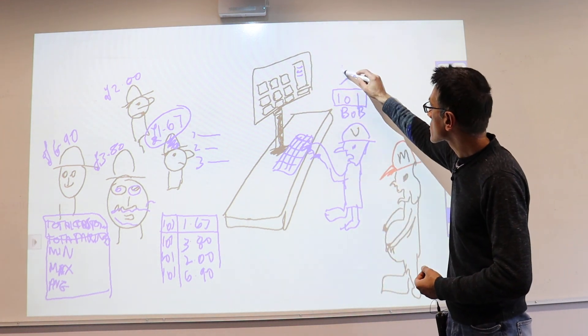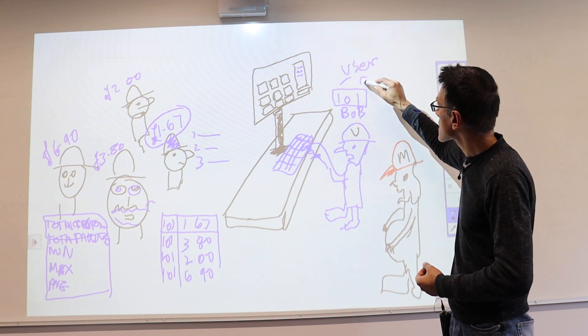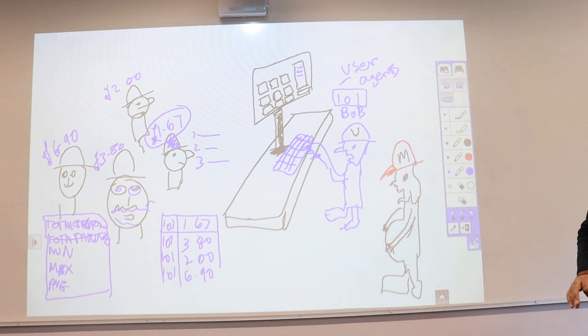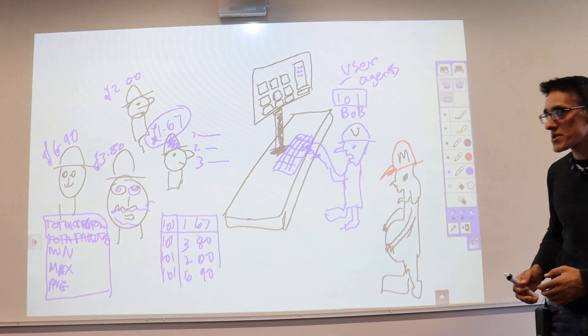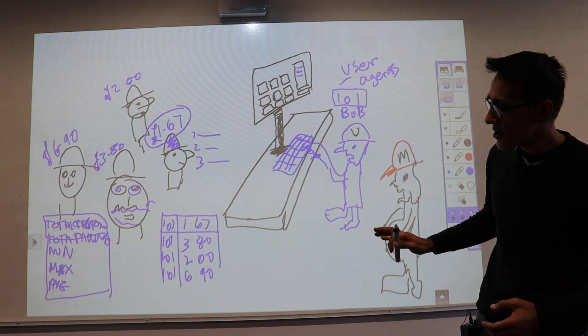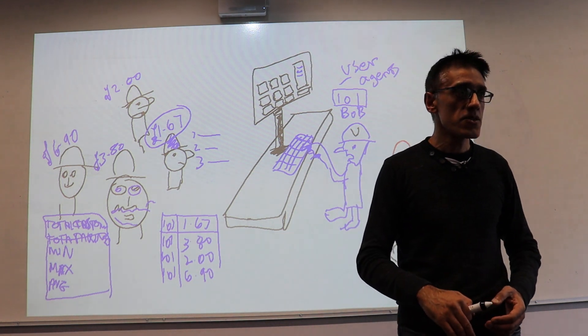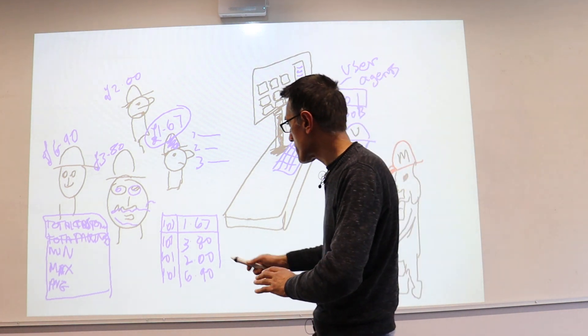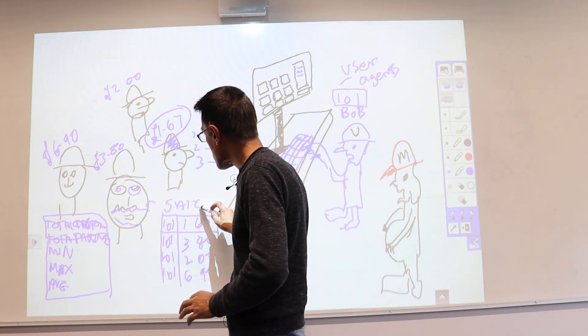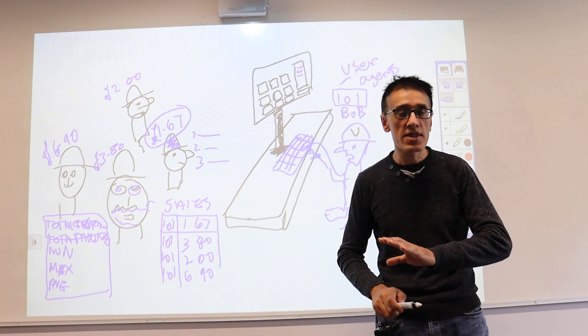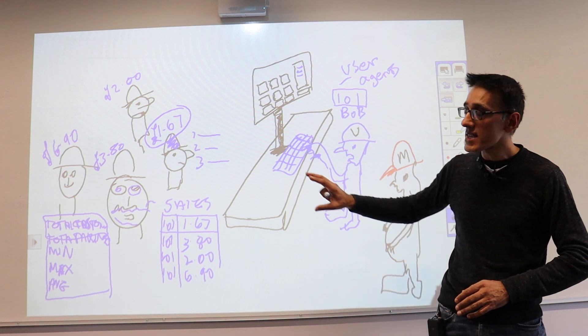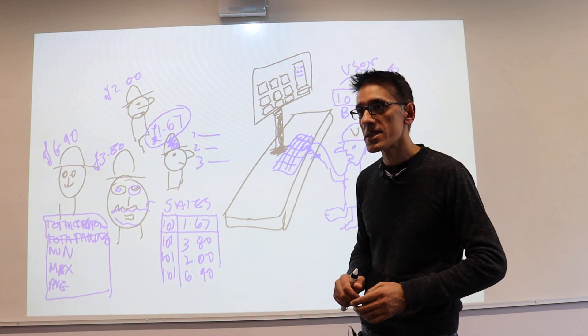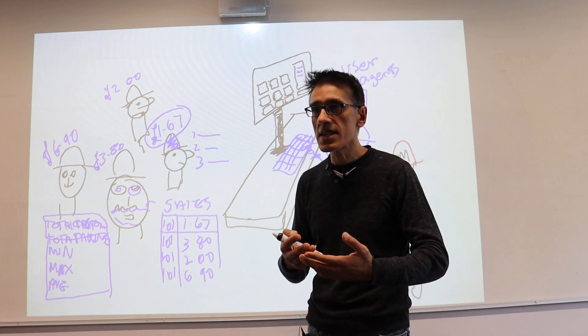These are known as user agents. There will be systems for adding those users. When a manager logs in, they should be allowed to reset the database. At the end of the day, managers can reset, which will simply delete the table we've set up to record sales. There'll be a table that saves all the sales, a table that saves all the users, and products will also be in the database. So that's three tables: users, products, and sales during the day.